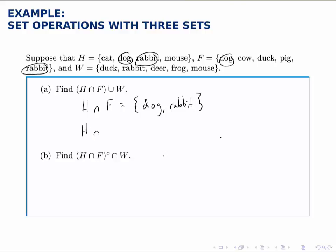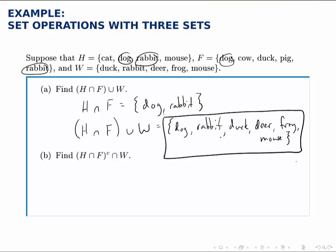To take the union of this set that we just found with W, we start with everything in that H intersect F, and then add anything from W that we don't already have. So we'll add duck, deer, frog, and mouse. But we don't need to add the rabbit, because we already had that listed. So our final answer is this set with six elements.